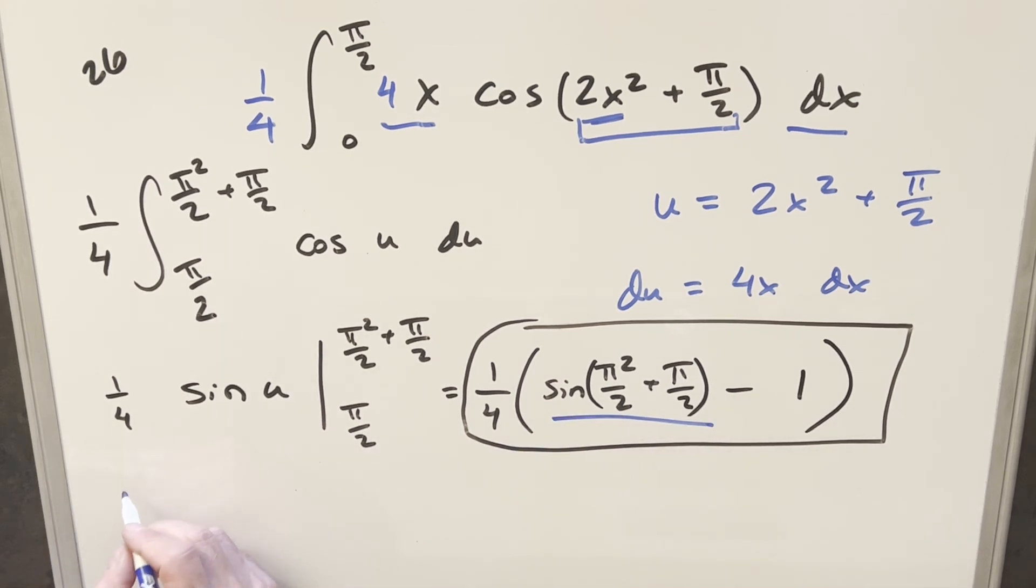So what I want to do for this is we'll use the different angle formula for sine. This just tells us that for sine a plus b, this is going to be the same thing as sine a cos b plus sine b cos a.